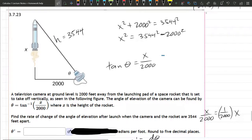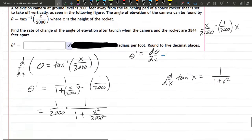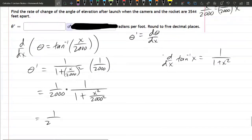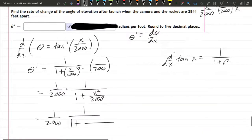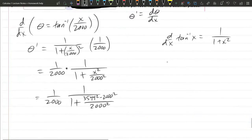That was 3,544 squared minus 2,000 squared divided by 2,000 squared. These are, again, multiplied, and this is theta prime.